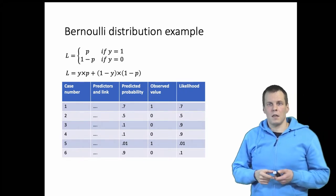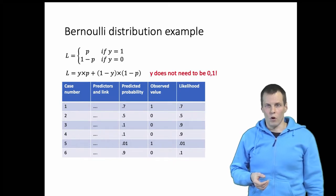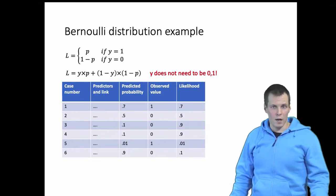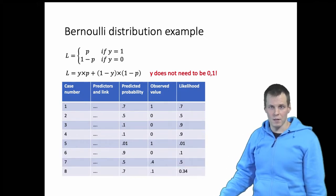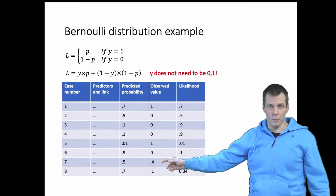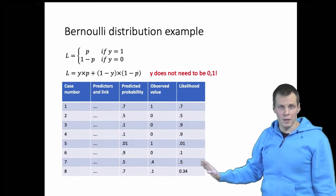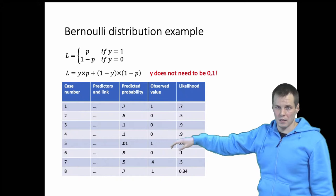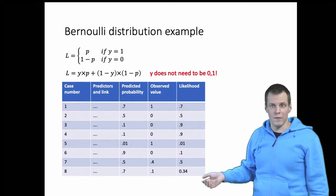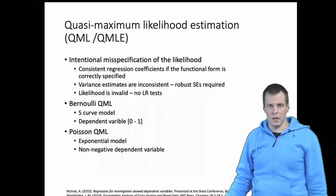The key insight in quasi-maximum likelihood estimation is that this equation actually works even if the dependent variable is not ones and zeros only. So we can calculate the result for observed values of 0.1 and 0.4 for example. These are not proper likelihoods but the estimates that maximizing the product of these likelihoods gives are actually consistent very generally. So this is a really nice idea. It's called quasi-maximum likelihood estimation.